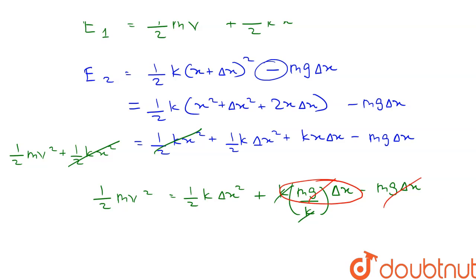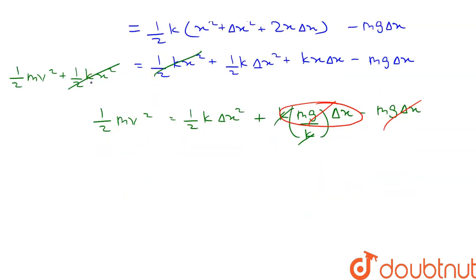Therefore, these two values will be cancelled. So we are left with half mv squared equals half k delta x squared. Half can be cancelled.